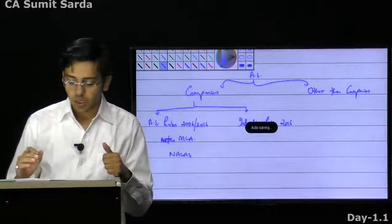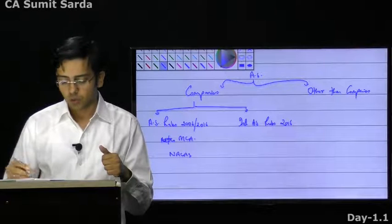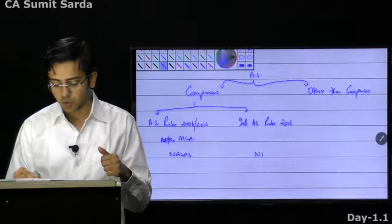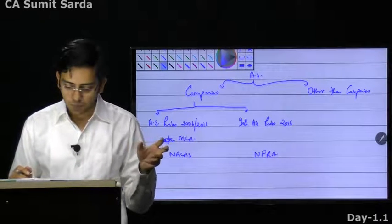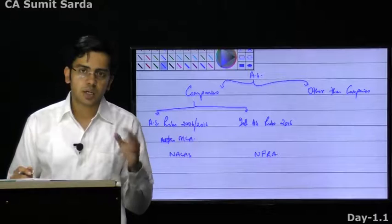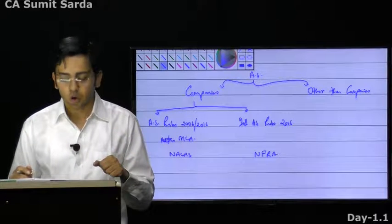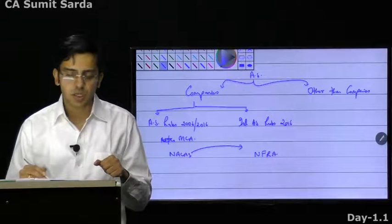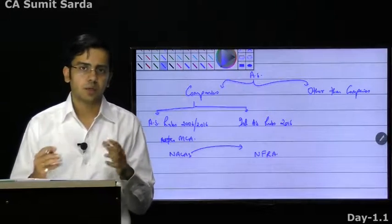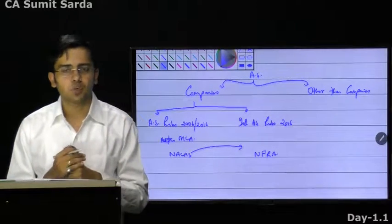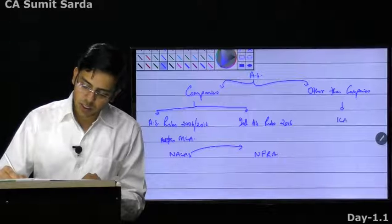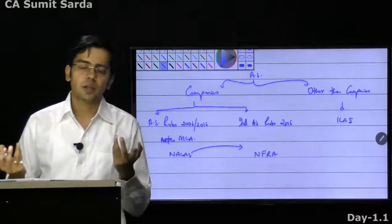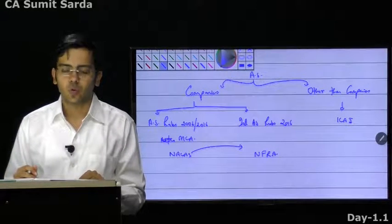When we talk about Indian Accounting Standards 2016, the power has been given to NFRA — the National Financial Regulatory Authority. However, NFRA is yet to be established as of this recording, so the powers are currently with NAKAS as well. NAKAS is the one actually taking care of the complete thing. For other than companies, whatever ICAI has said is final and that's what everyone has to follow.